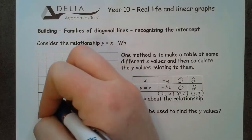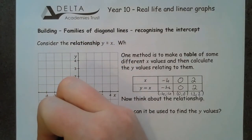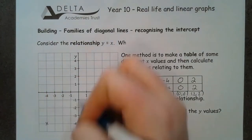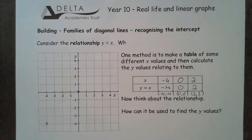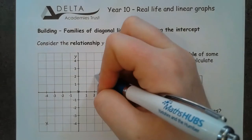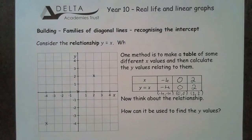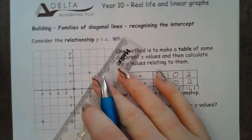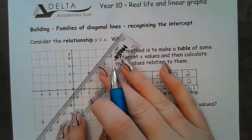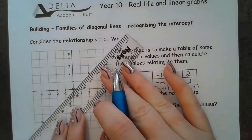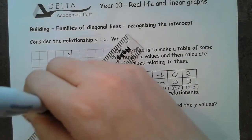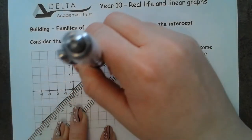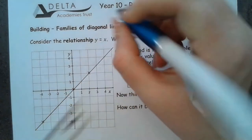So all I'm going to do is plot those as coordinates: minus 4 minus 4, 0 0, and 2 2. If I plot those and then join those coordinates up, I get a line. That line is the line y equals x.